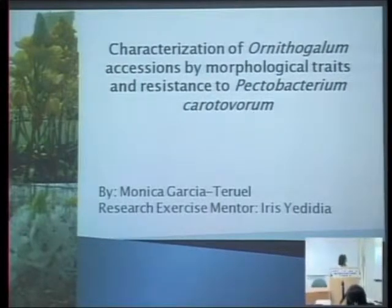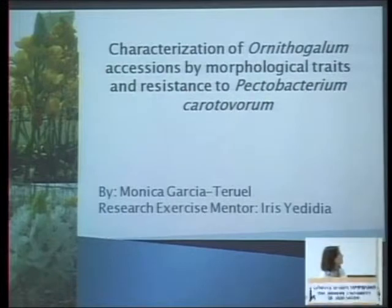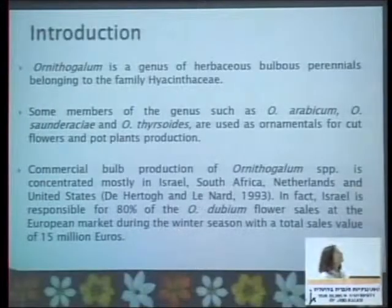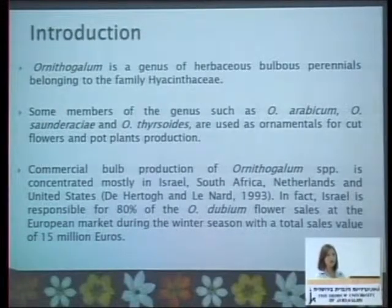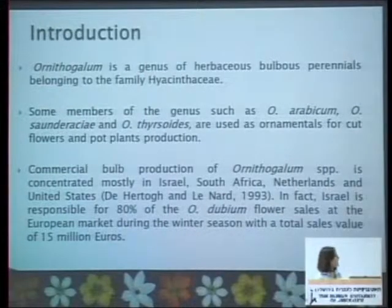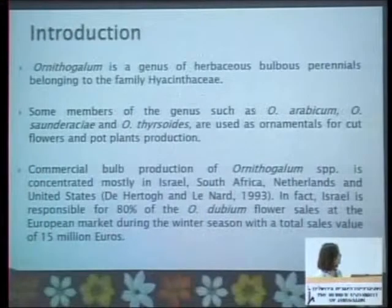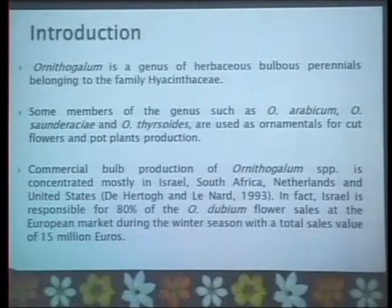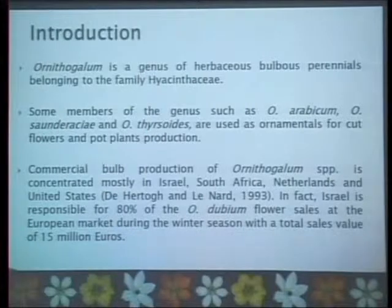I'm going to talk about Ornithogalum characterization by morphological traits and resistance to Pectobacterium carotovorum. Ornithogalum is a genus of herbaceous bulbous perennials belonging to the family Hyacinthaceae. This flower is native from South Africa and has colors from white to yellow to deep orange. Some members of this genus are used as ornamentals either for cut flowers or pot plant production, depending on characteristics, mainly morphology such as inflorescence size and number of flowers.